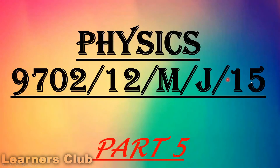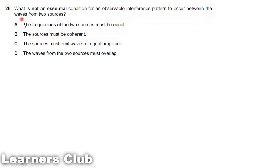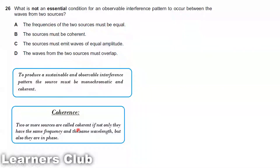Part 5, Major 2015 Paper 12, Question 26: What is not an essential condition for an observable interference pattern to occur between waves from two sources? To have interference, two or more waves should overlap. To produce a sustainable and observable interference pattern, the sources must be monochromatic — meaning a single wavelength — and coherent. Two or more sources are coherent if they have the same frequency, same wavelength, and are in phase.